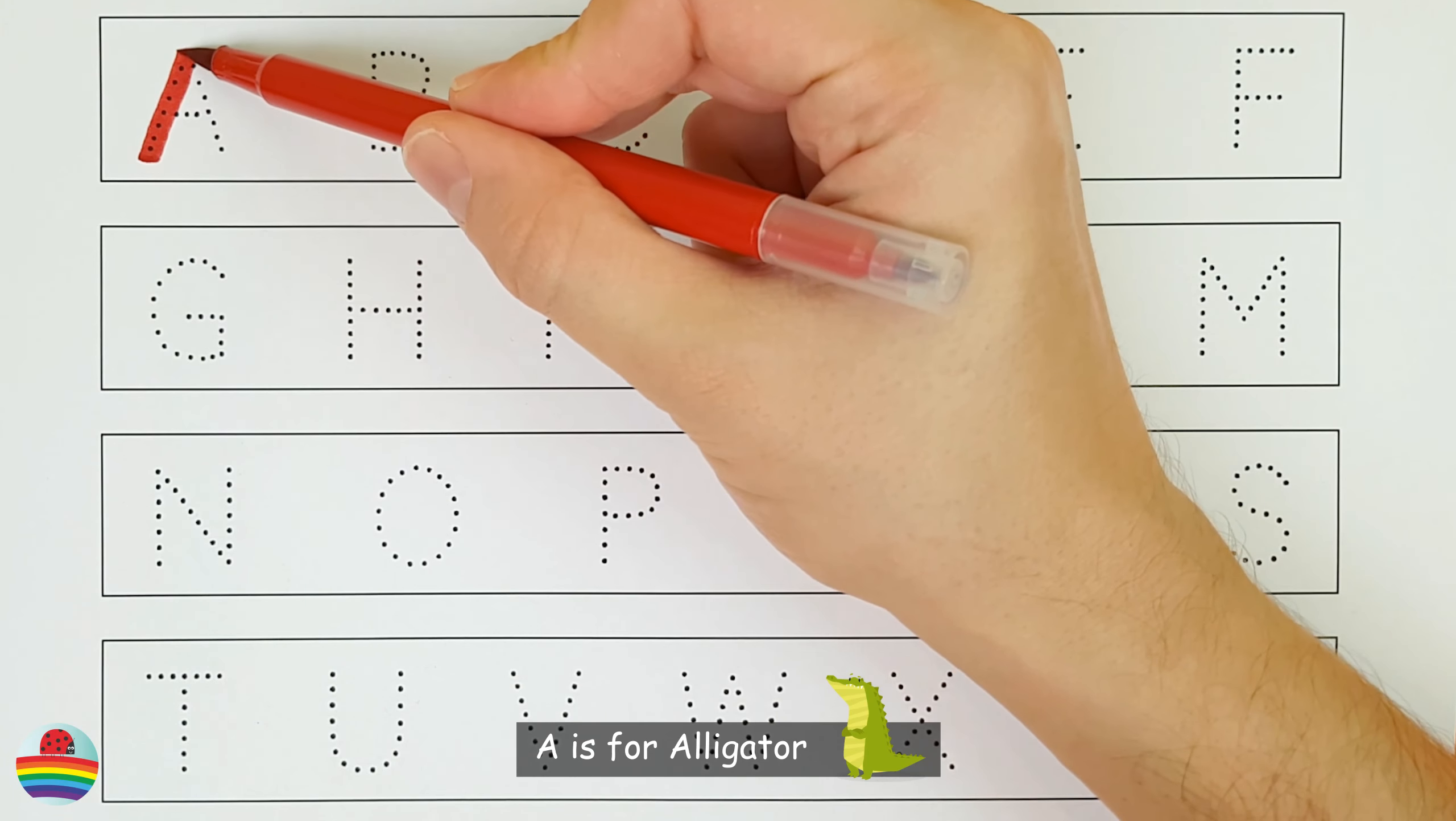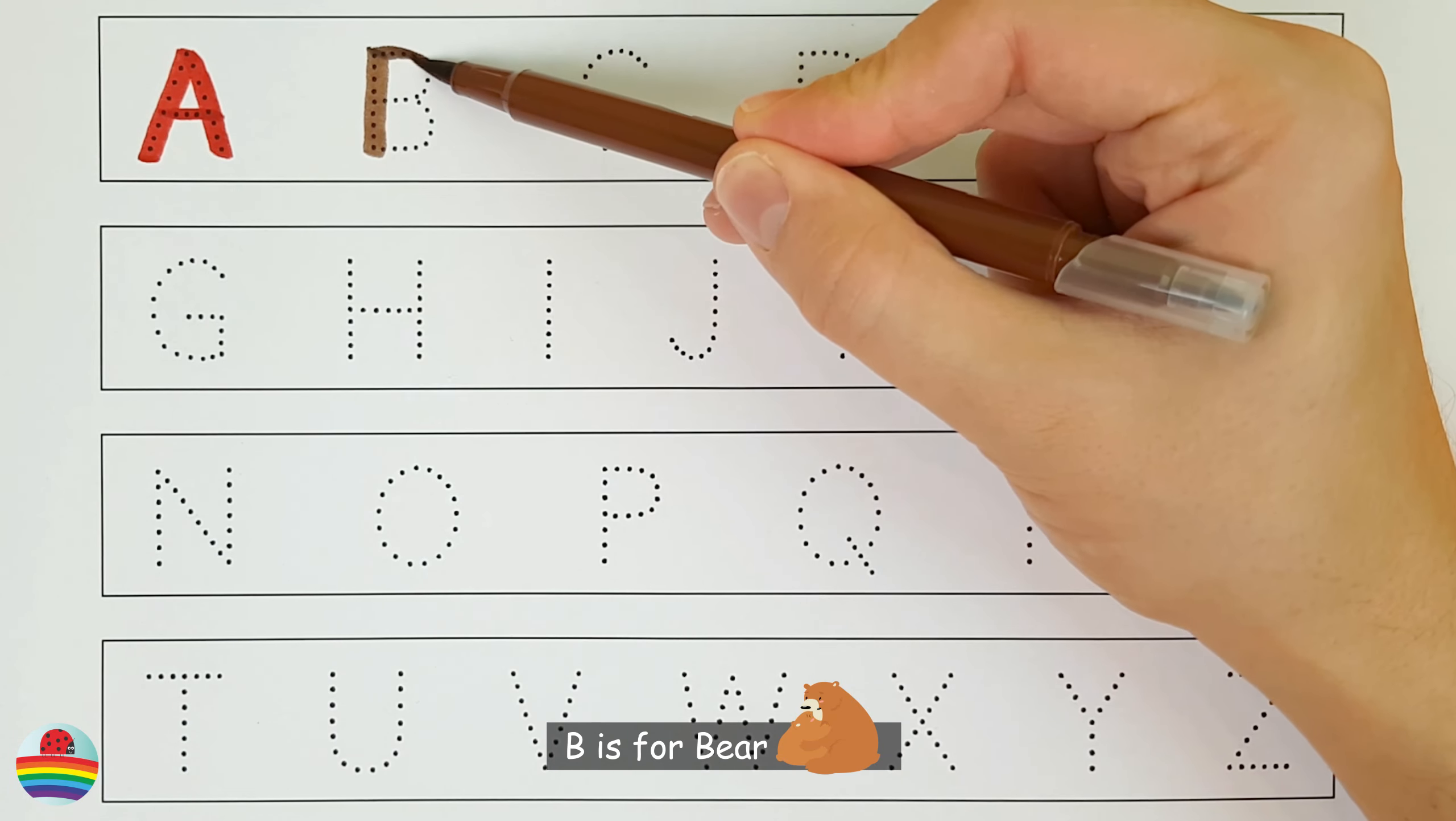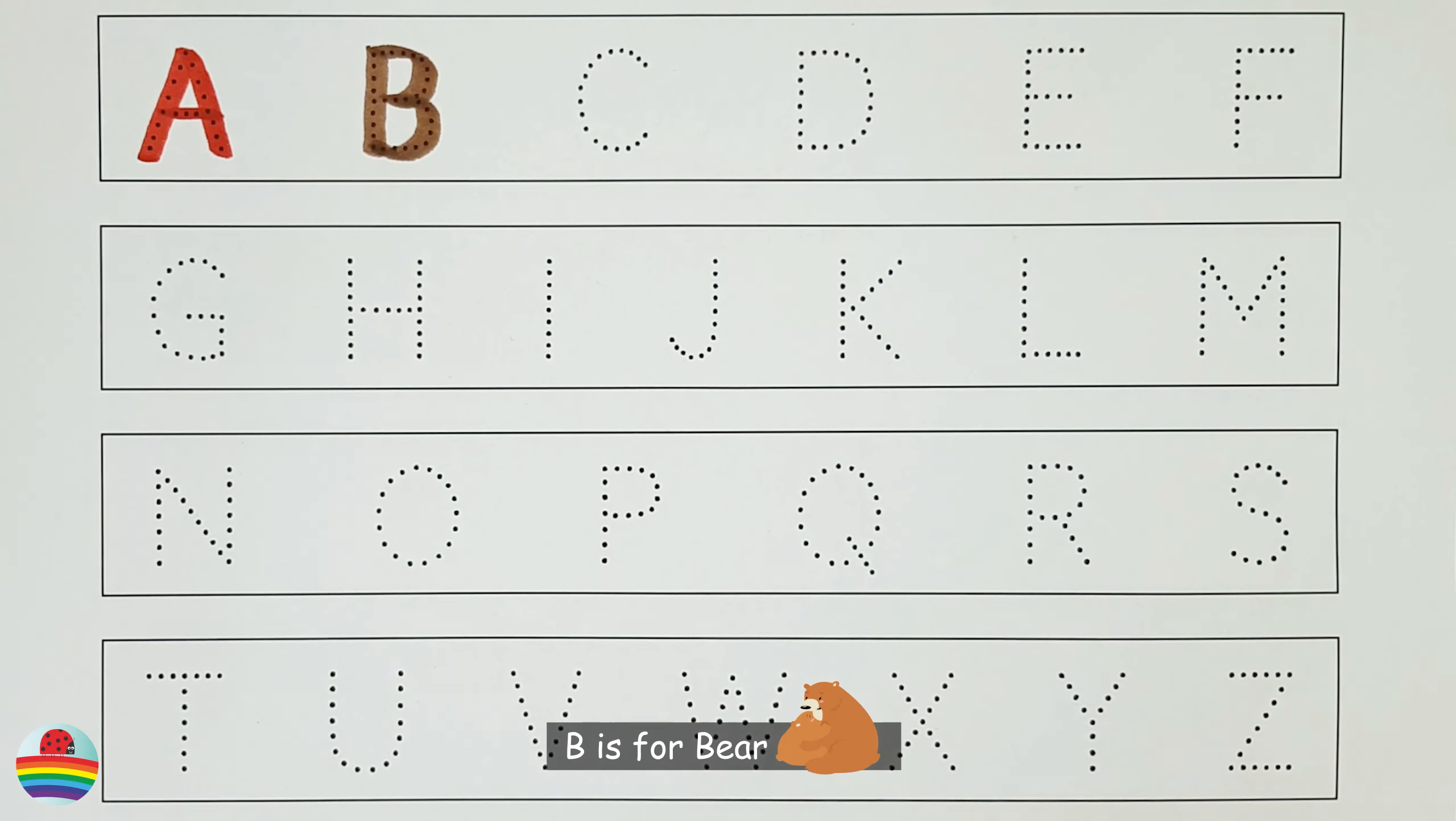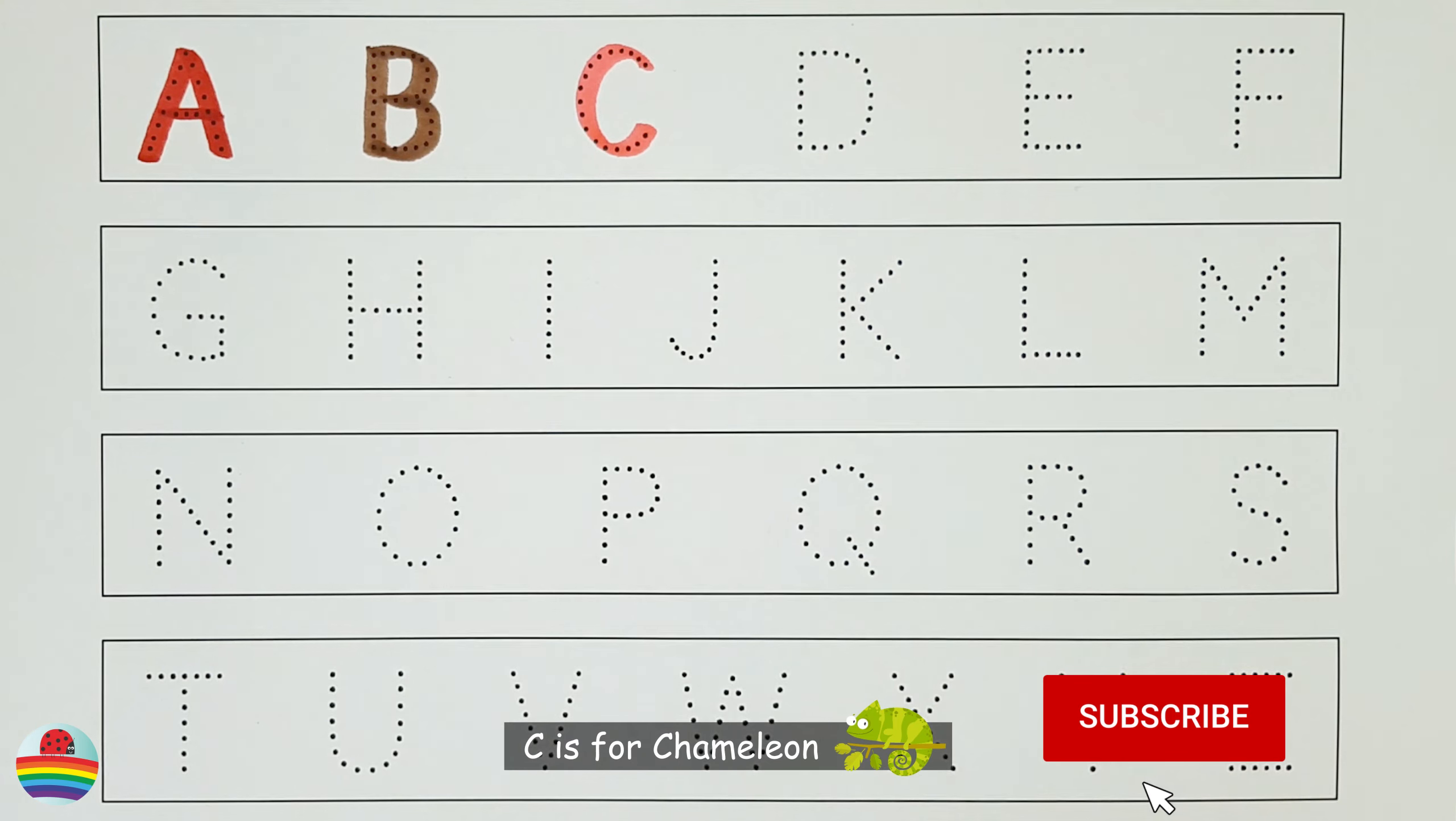A. A is for Alligator. A. B. B is for Bear. B. C. C is for Chameleon. C.